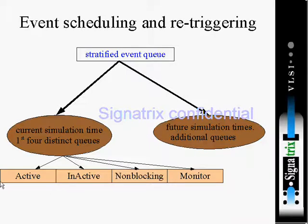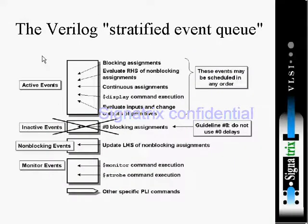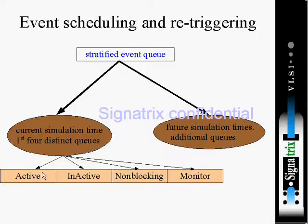This is how your simulator looks: active, inactive, non-blocking, and monitor — these are the regions in your simulator. This is Verilog's stratified event queue. Now we'll see which statements execute at which event. As there are four regions, some statements will execute in the active region and some will execute in the inactive region.